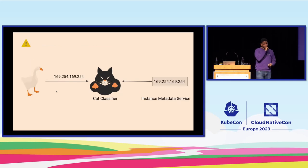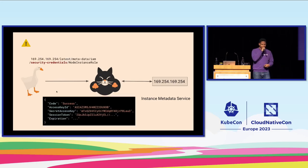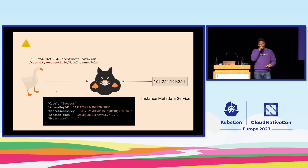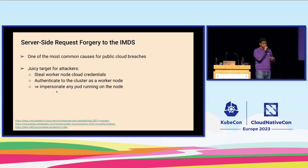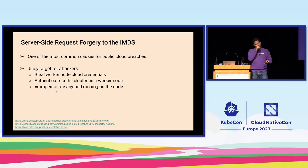SSRF is very problematic because if there's not enough input sanitization, a malicious attacker can supply the instance metadata service URL to fetch information they shouldn't have access to. The attacker can request that URL and the cat classifier application will return the information available from within the pod — in this case, all the credentials of the node. It's one of the most common causes of public cloud breaches and misconfigurations.